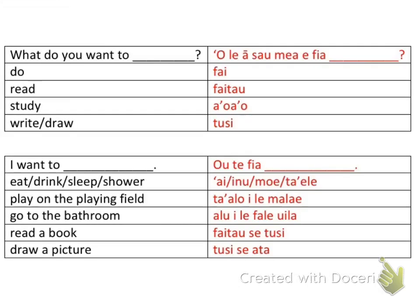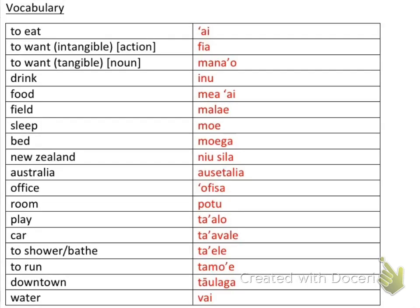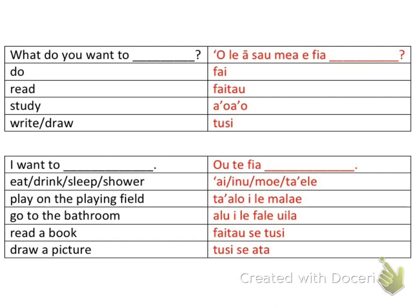Pause the video here, memorize these, put them on flashcards, and then we're moving on. The first basic phrase we're going to learn is 'what do you want to.' In Samoan that's 'O lea sa'o mea ai fia,' and 'do' would be 'fai' — 'O lea sa'o mea ai fia fai.'